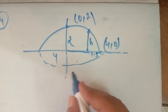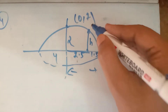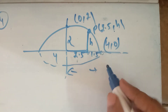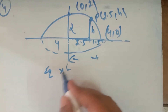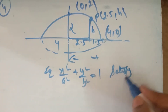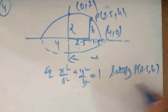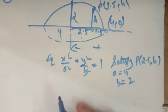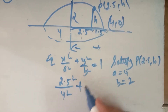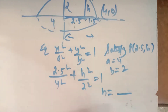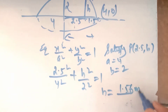एक end से यह 1.5 है, so this distance = 4 − 1.5 = 2.5। So the coordinates of point P are (2.5, H). Now this point will satisfy the equation of the ellipse: X²/A² + Y²/B² = 1, where A = 4 and B = 2. So (2.5)²/16 + H²/4 = 1. Solving this gives H ≈ 1.56 meters — this is the height of the arc 1.5 meters from one end.